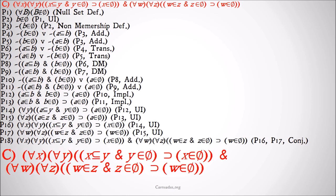Hopefully that made sense. Basically, what we did was we worked out from the part we were aware of. The Y is not a member of the null set and Z is not a member of the null set. Working out from that, we were able to show the whole conjunction.